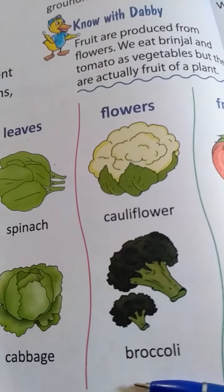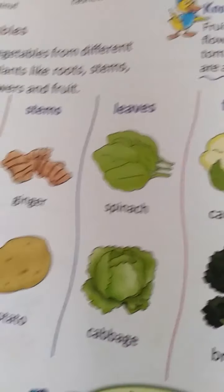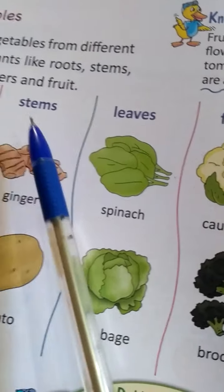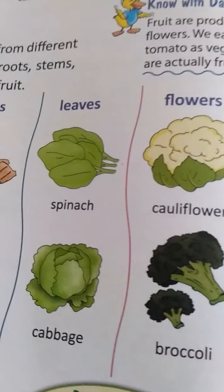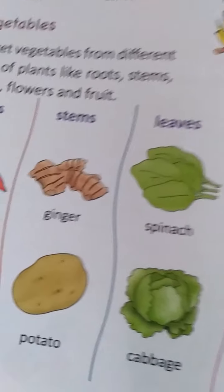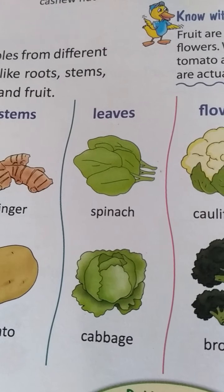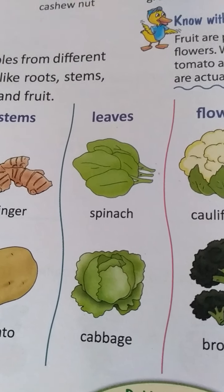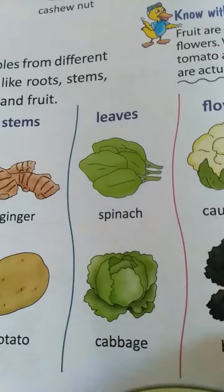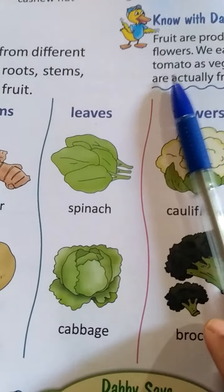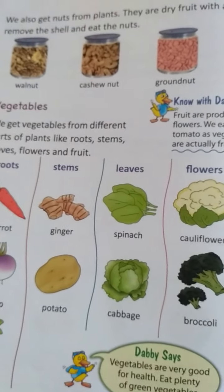Similarly, cauliflower and broccoli are flowers. Tomato and brinjal are fruits we eat. We eat parts of plants — roots, stem, leaves, flower, and fruits — in daily life. These vegetables give us energy and are good for our health. Students, read and remember this.